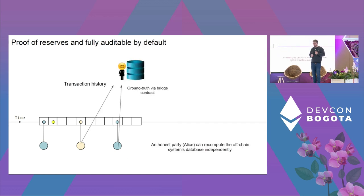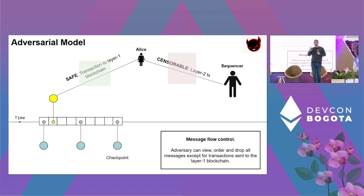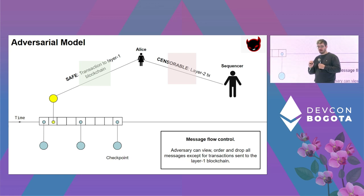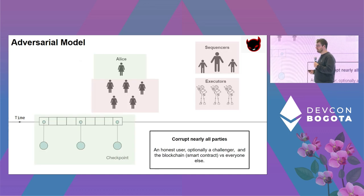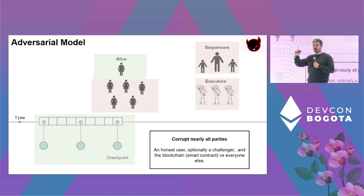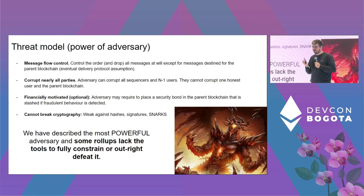Who is the adversary? Two aspects to consider. First, message flow control: the adversary can view, reorder, and drop all messages on the layer 2 system. The only guarantee an honest party has is that they can send a transaction directly to Ethereum and to the bridge. Second, the adversary can corrupt nearly every single party on the off-chain system — we only assume the bridge cannot be corrupted, and there is one honest party who can assist the bridge.